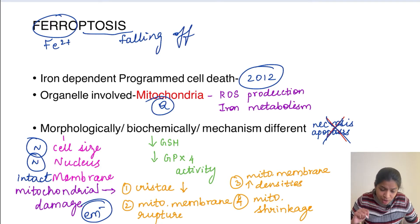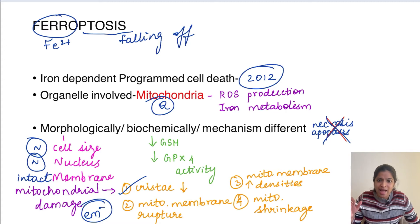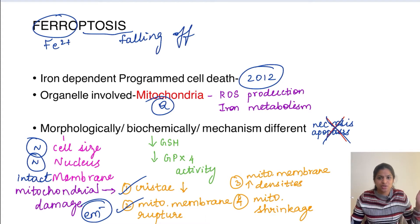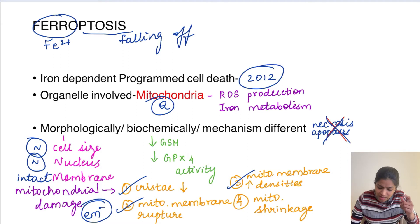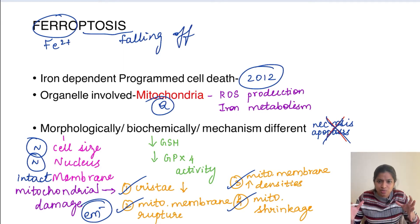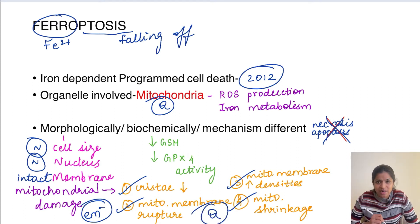In the mitochondria during ferroptosis, the number of cristae decreases or is absent. The outer mitochondrial membrane gets ruptured. The mitochondrial membrane shows increased density — it becomes thicker and denser. And the mitochondria itself shrinks in size. These ultrastructural findings can be asked in MCQs.